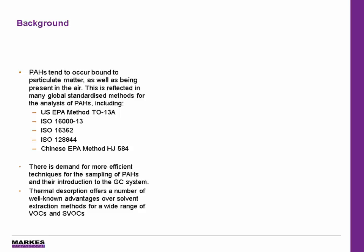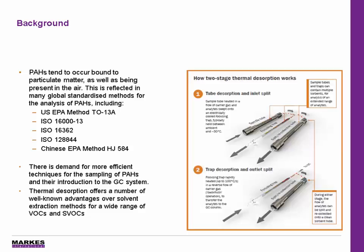This is reflected in many of the global standard methods for the analysis of PAHs. Most of these require the use of quartz filters to trap the particulates, backed up by a sorbent cartridge to collect the vapour phase fraction, and any analytes released from the particulate matter during sampling. This filter-cartridge system is rigorously conditioned before being used for air sampling, and then is solvent-extracted, concentrated and subject to a silica gel clean-up, followed by direct injection into a GCMS system. This lengthy multi-step process can sometimes be prone to errors, and the use of solvent raises concerns about volatile analytes being lost during the evaporation stage.